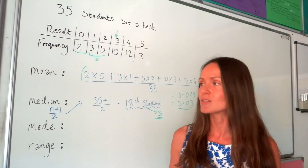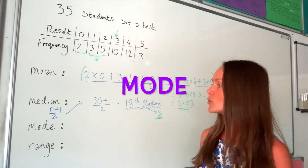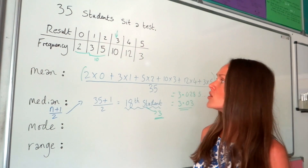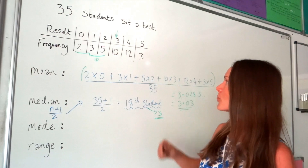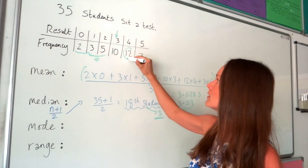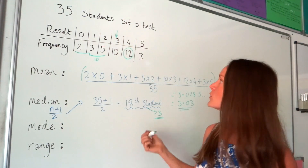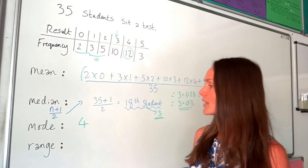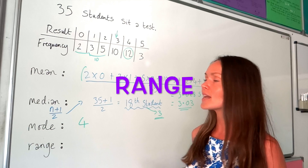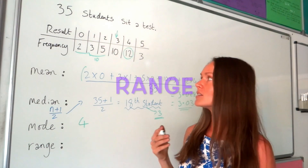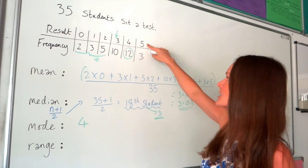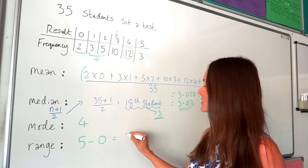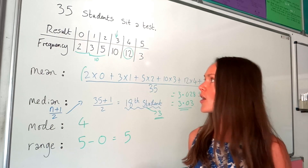The mode is the result with the highest frequency. Looking along the frequency row, the highest value corresponds to the number four, so the mode is four. For the range, the highest result is five and the smallest is zero, so five minus zero equals five — the range is five.